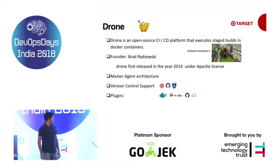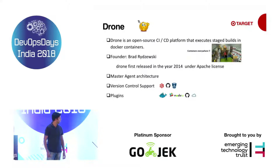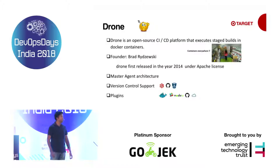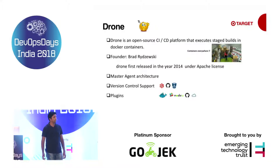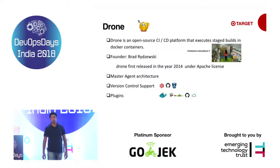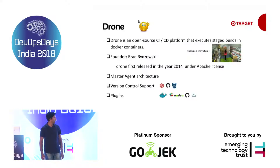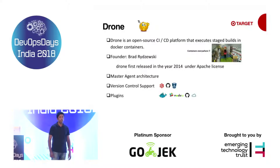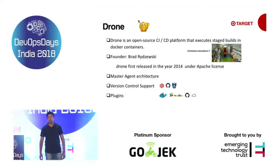Drone is integrated with various version control systems such as Gitea, Bitbucket, and GitHub. There are a lot of plugins available around Drone. For instance, if you want to push your Docker images to a Docker registry, you use the Docker plugin. Or if you want to post success or failure status to Slack, you use a Slack plugin. There are many plugins in the plugins repository, and Drone empowers developers to write custom plugins in various languages such as Golang, Python, et cetera.